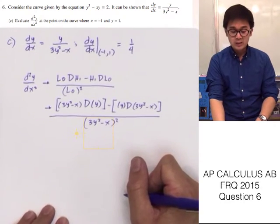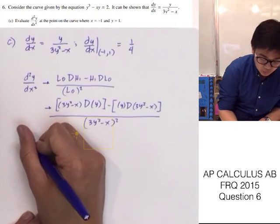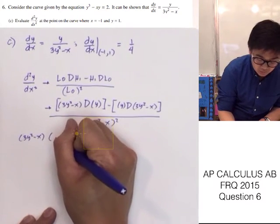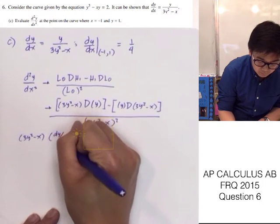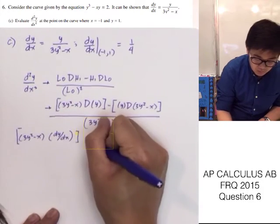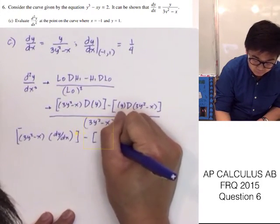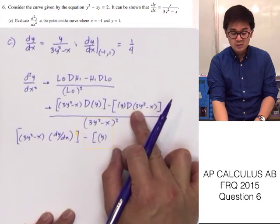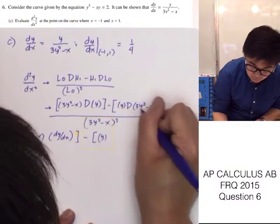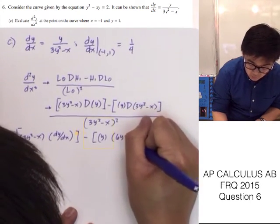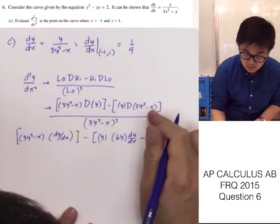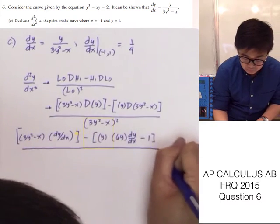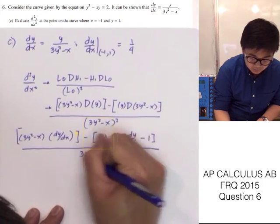Simplifying the numerator by taking the derivatives: we copy the first term and take the derivative of y, which is dy/dx, minus copy the first term times the derivative of 3y squared minus x. The derivative of 3y squared is 6y dy/dx, and the derivative of x is 1. This is all over 3y squared minus x squared.